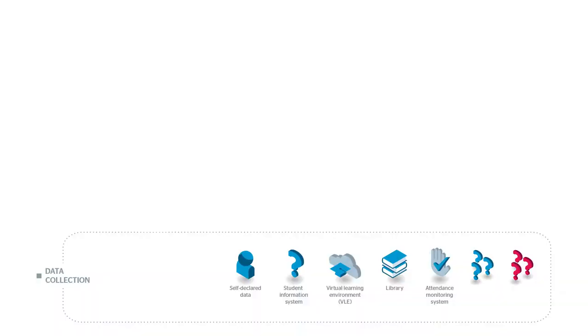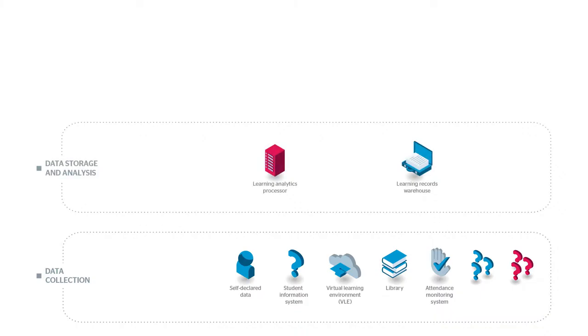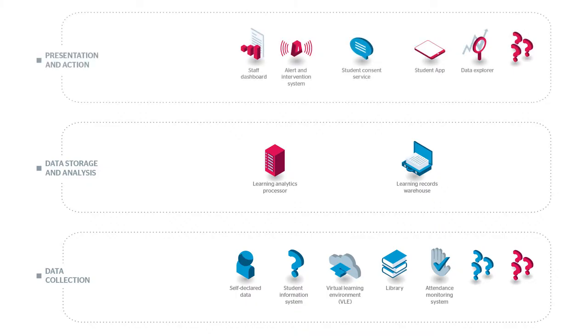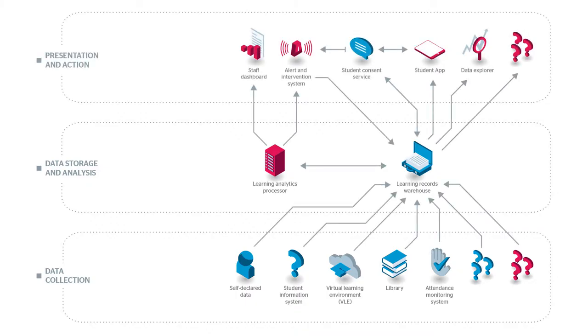Looking at the three tiers, the three layers are: firstly, the data collection layer, where we gather information about students and the things they are doing. Second is the storage and analysis layer, where we hold the data and make predictions. Then we have the most important layer, the action layer, where people actually do things based on the predictions.